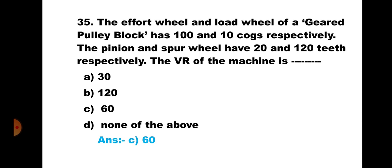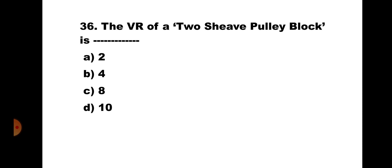Remember to not get confused with N1, N2, N3, N4 — keep the formula clearly in mind to get the correct answer. Question number 36: The VR of a 2-shoe pulley block is: A) 2, B) 4, C) 8, D) 10. A 2-shoe pulley block is the second system of pulleys, with 2 pulleys in the fixed block and 2 in the movable block — total 4 pulleys. VR = total number of pulleys = 4. The correct answer is B) 4.